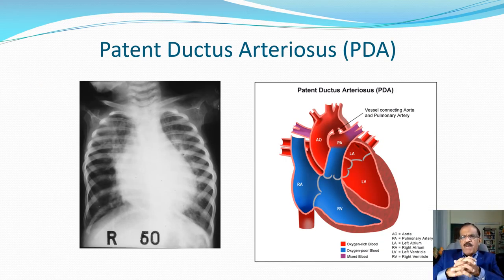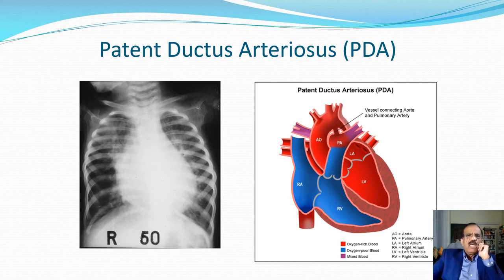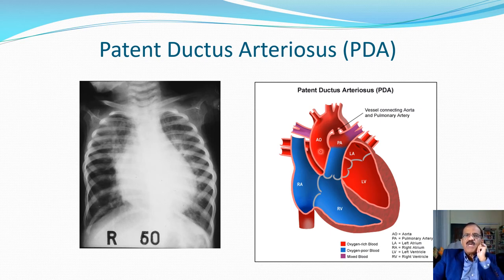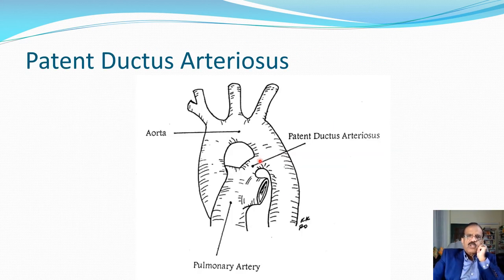Since many features are similar, I will include patent ductus arteriosus in this lecture. The ductus arteriosus — connecting the aortic arch to the pulmonary artery — is normal in the fetus, but should close at birth. If it does not close, it is called patent ductus arteriosus. Oxygenated blood from the aorta then flows into the pulmonary circulation, again causing increased pulmonary circulation and pulmonary pressure, similar to VSD.